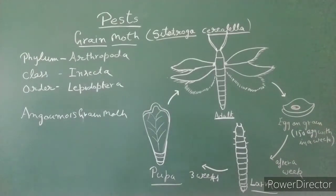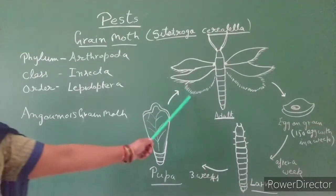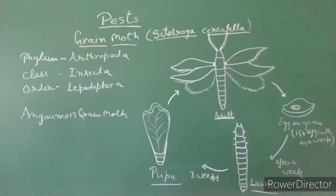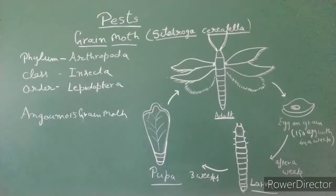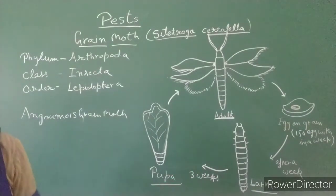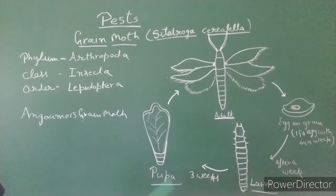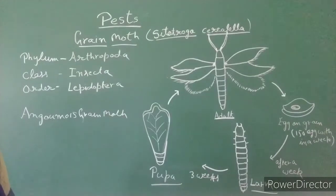They also attack wheat in the field. In morphology, the adult moth is gray, yellow and brown in color. Its size is 10 to 12 millimeters in length. The larva is white, creamy color and 5 millimeters in length. Its head is very characteristic, of yellow and brown color.